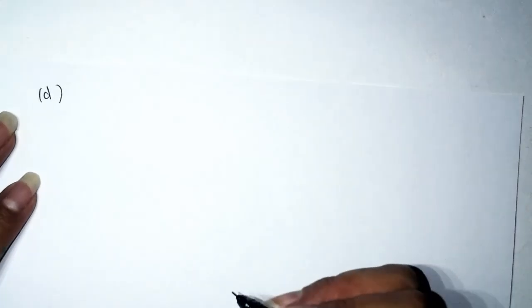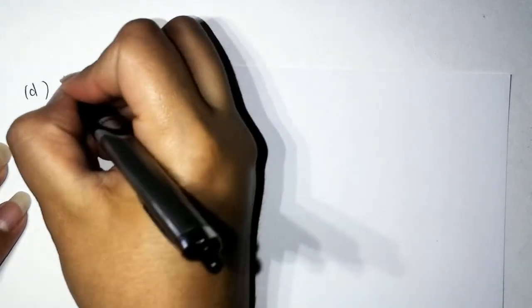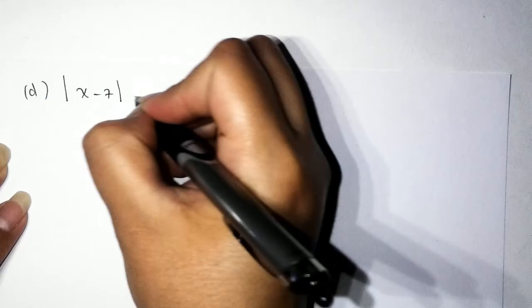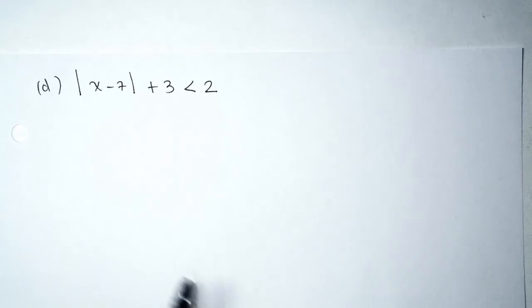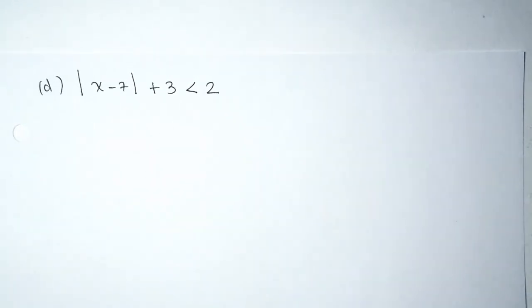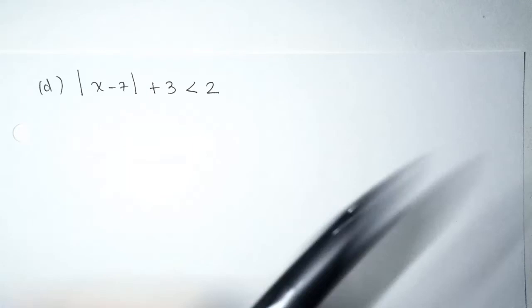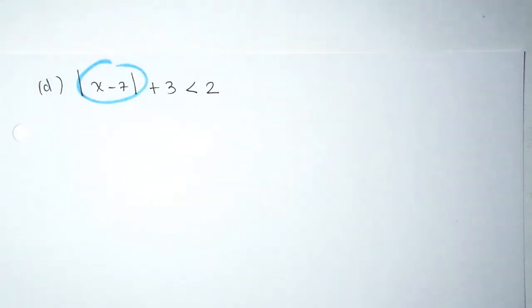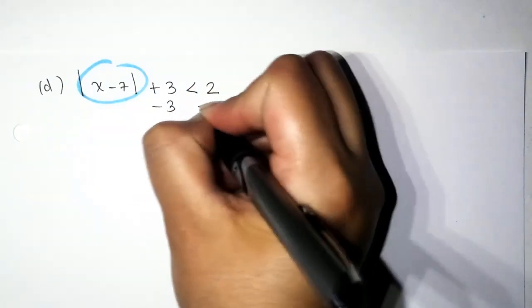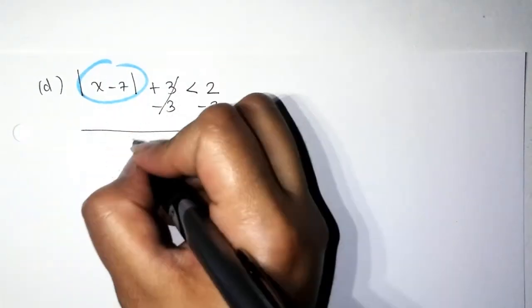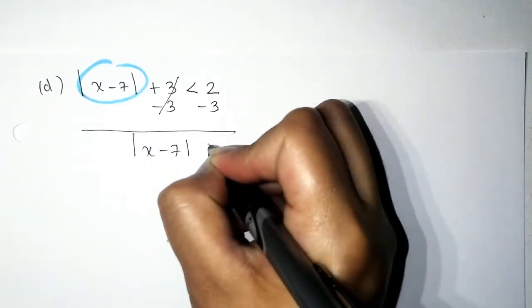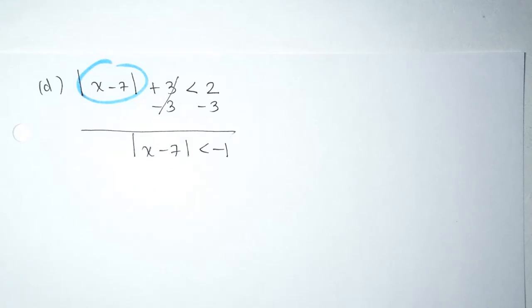Problem D: absolute value of (x − 7) plus 3 is less than 2. Absolute value inequality — first isolate the absolute value. Subtract 3 from both sides: absolute value of (x − 7) is less than −1.